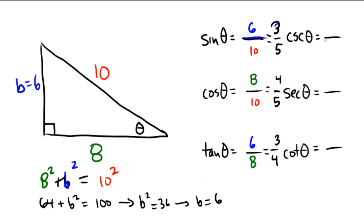So now to get the other 3 trig functions, or trig ratios, we just reciprocal our original answers. 5 thirds, 5 fourths, and 4 thirds. And that is all of the trig ratios in this right triangle.